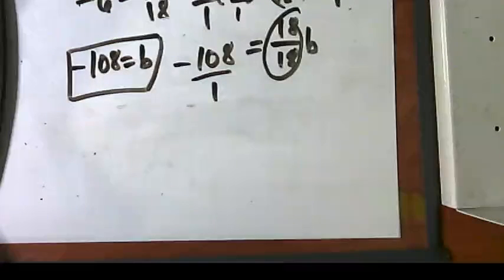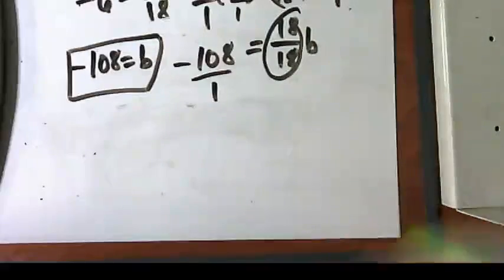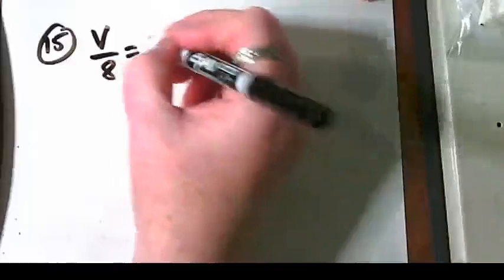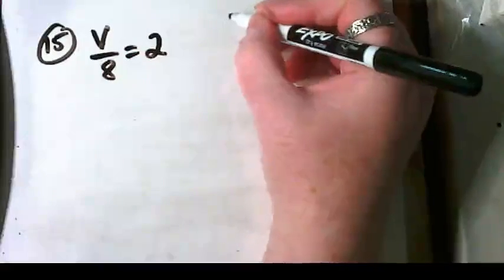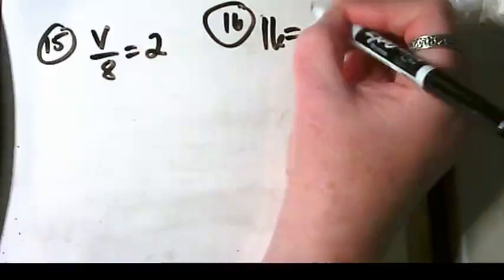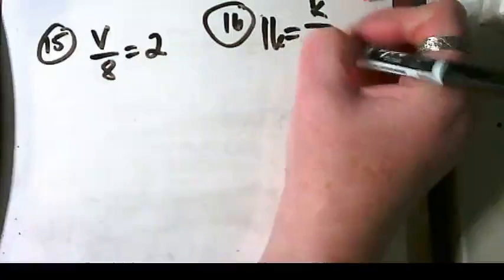Why don't you turn your paper over and look at 15 and 16. 15 is V over 8 equals 2. And 16 is 16 equals K over 11.